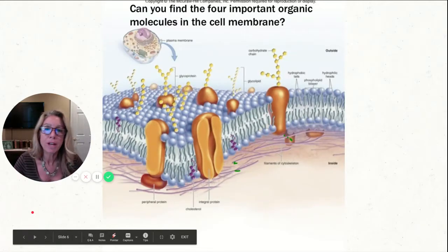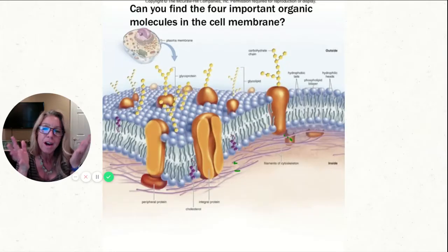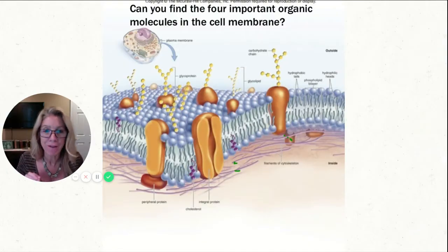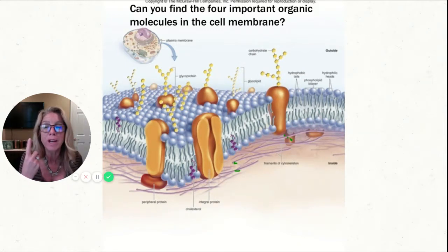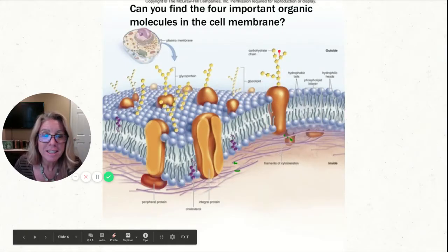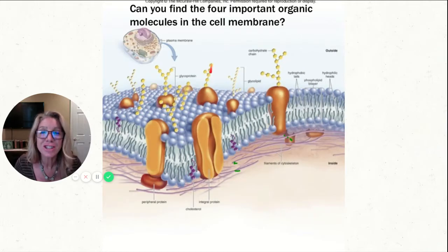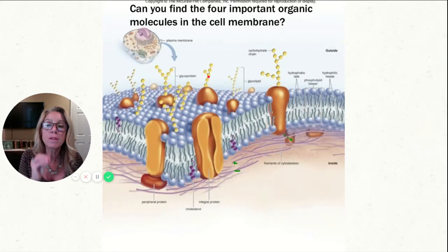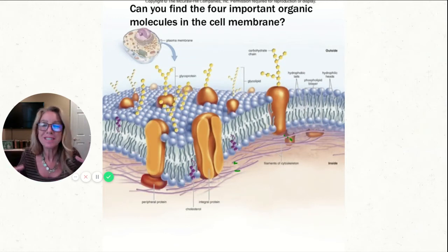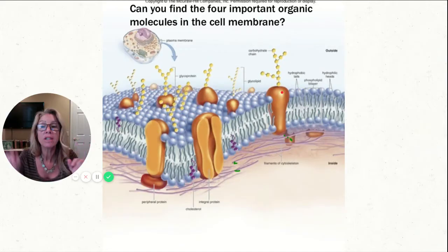Can you find all four important organic molecules in the cell membrane? Hopefully you said no — you can only see three of the four. The first organic molecule we studied were carbohydrates, built out of sugars. These series of sugars connected together are the yellow carbohydrate side chains. They are called glycolipids if attached to a phospholipid, or glycoproteins if attached to a protein. That has a lot to do with cell recognition, which we'll talk about more in a moment.